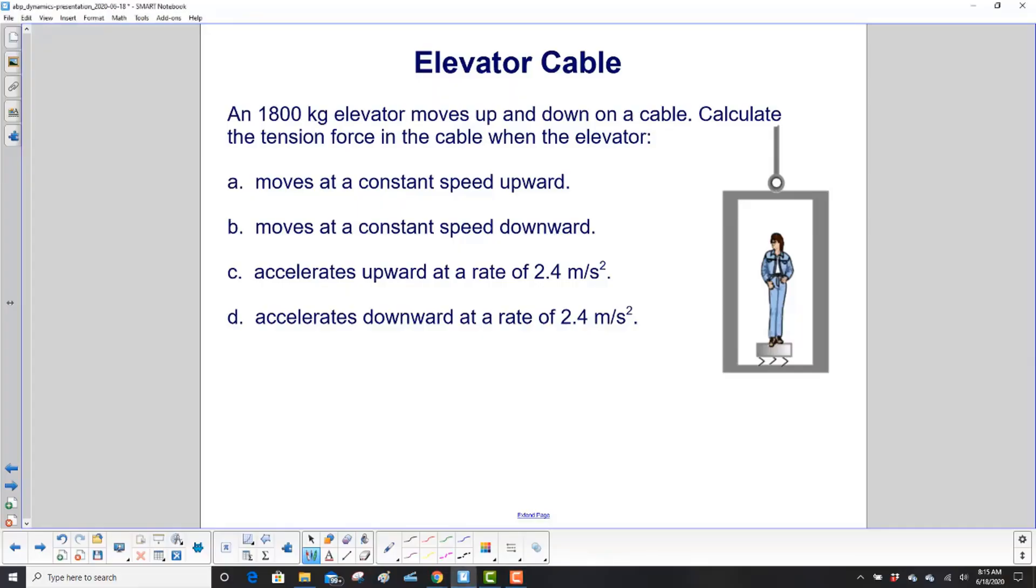Our first problem is the elevator cable. We have an 1800 kilogram elevator moving up and down on a cable. Calculate the tension force in the cable when the elevator: moves at a constant speed upward, moves at a constant speed downward, accelerates upward at a rate of 2.4 meters per second squared, or accelerates downward at the same rate.